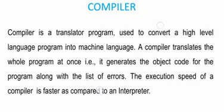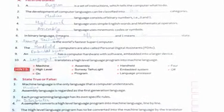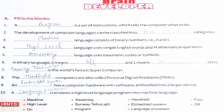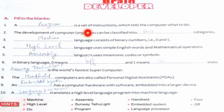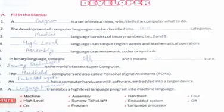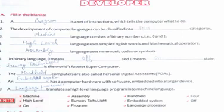That's all from the chapter. Now I will give you some exercises. First, we will solve fill in the blanks. First: a dash is a set of instructions which tells the computer what to do. Here we will fill in the word program. A program is a set of instructions which tells the computer what to do.